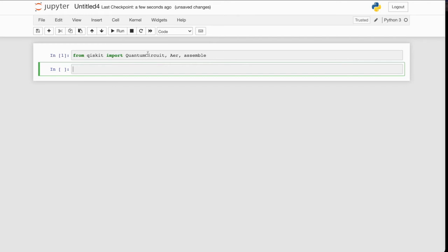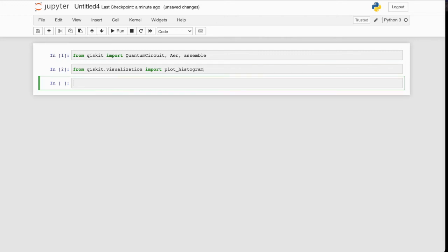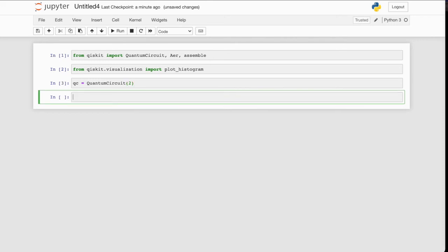These libraries allow us to create a quantum circuit to find the backend for executing our quantum circuit, and for assembling our quantum circuit into a runnable object. So let's also import something for visualizing our circuit and our results. So from Qiskit visualization, let's import plot_histogram. Now we can create our first part of our quantum circuit. So qc equals QuantumCircuit. And we want to create a quantum circuit with two qubits.